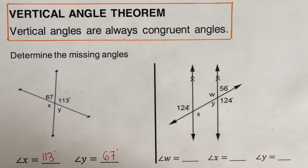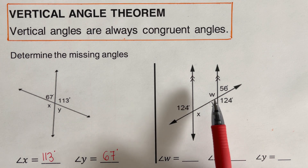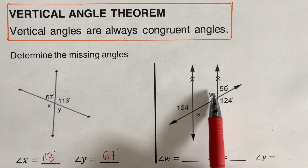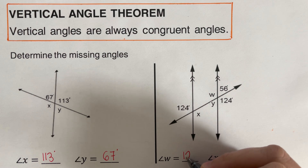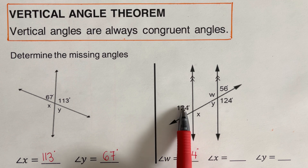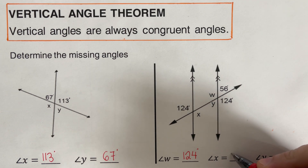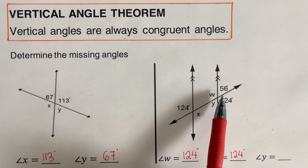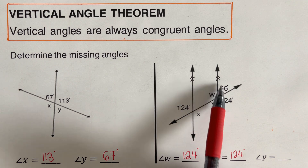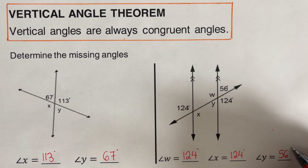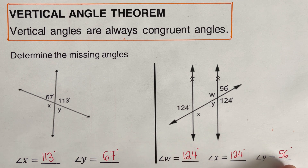Let's go over the next problem. Angle W is vertical to 124 degrees, so angle W is 124 degrees. Angle X is also vertical to 124 degrees, so angle X is 124 degrees as well. For angle Y, it is vertical to 56 degrees — they are across from each other — so angle Y is 56 degrees. The answers are: angle W = 124°, angle X = 124°, angle Y = 56°.